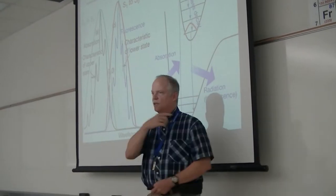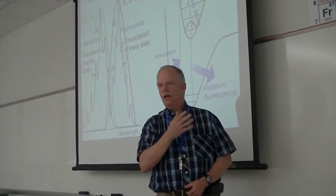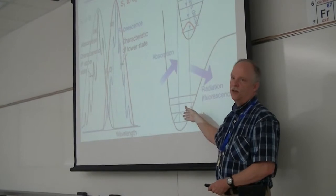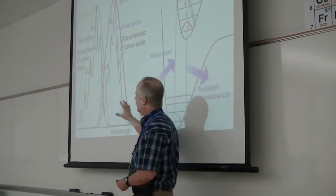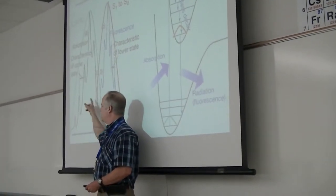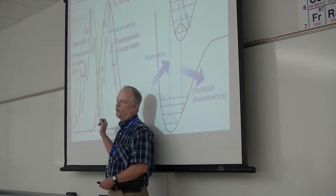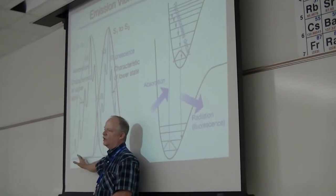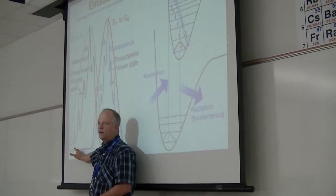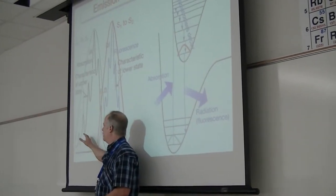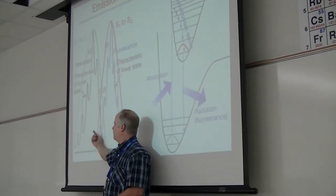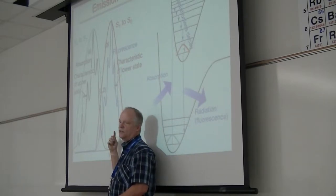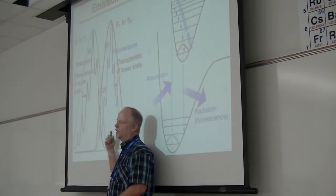Hopefully, after doing this on the board last time, you can understand this diagram. We have the potential energy surface on the right, and on the left we have an excitation profile and an emission profile. This is the absorption side on the short wavelength side of a UV-Vis type graph, and then the emission profile — the fluorescence side — is always red-shifted.